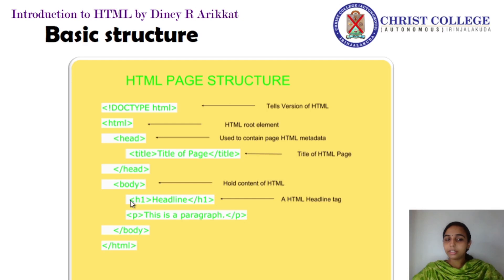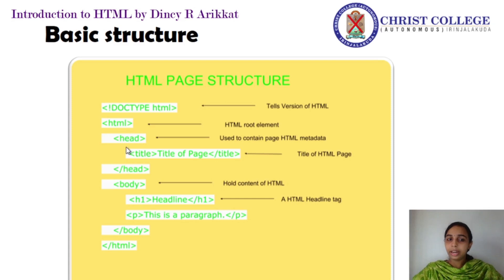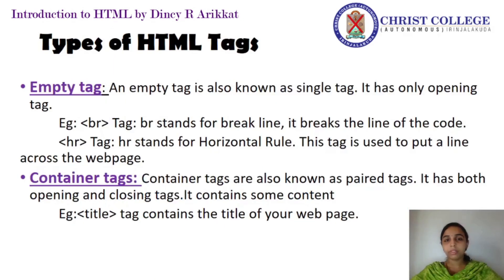The head tag contains metadata information — not only the title, but we can also provide style information in the head tag. After closing the head tag, we must open the body tag. The body tag contains the actual content. Here h1 and p are two elements provided — h1 means heading and p means paragraph. After writing all the contents we must close the body tag, and after closing the head tag and body tag we must close the HTML root tag. So this is the general structure.